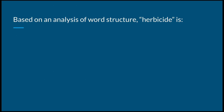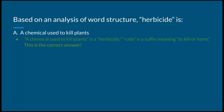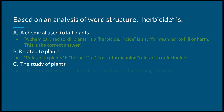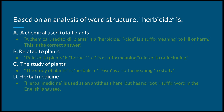With all those in mind, let's take a look at our answer options. Option A — a chemical used to kill plants — is an herbicide. -Cide is a suffix meaning to kill or harm. Option B — related to plants — means herbal. -Al is a suffix meaning related to or including. C — the study of plants — is herbalism. -Ism is a suffix meaning to study. And finally, D — herbal medicine — has no root-plus-suffix word in English; we simply call it herbal medicine.